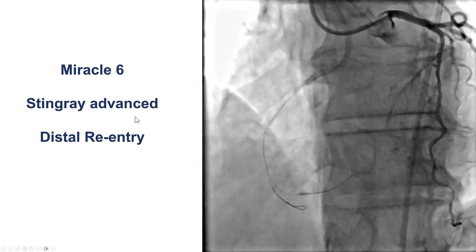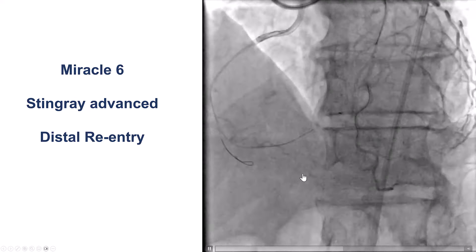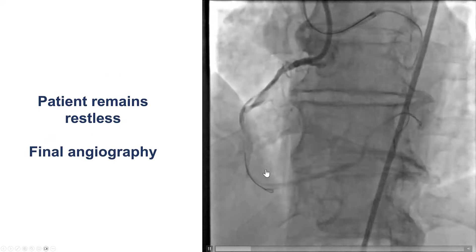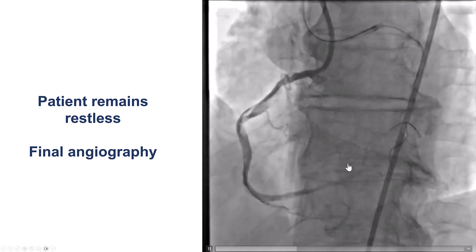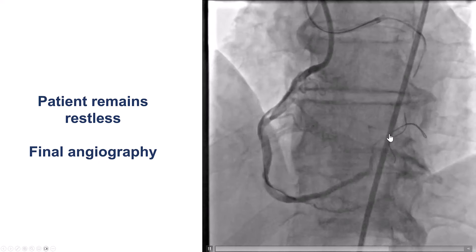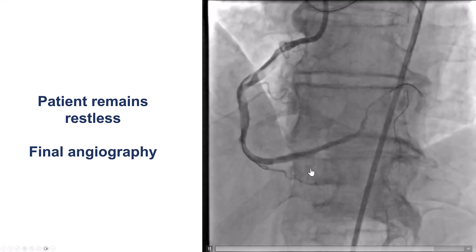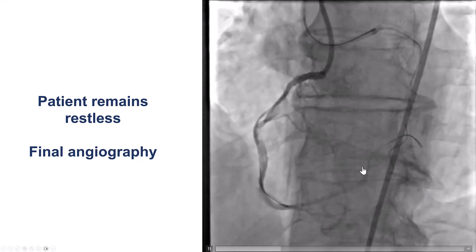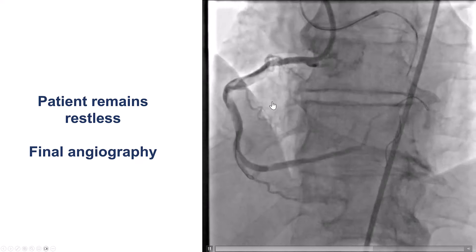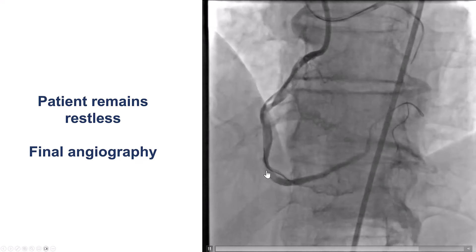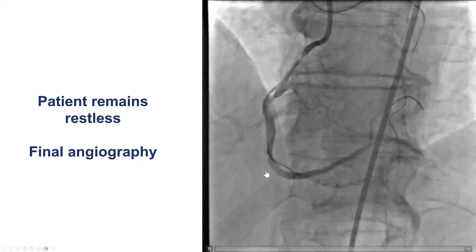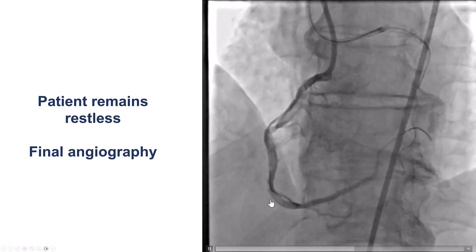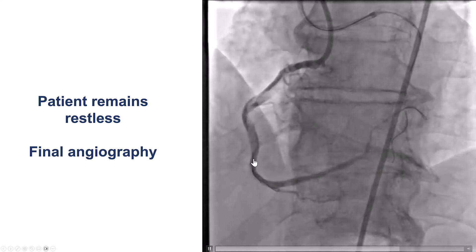We exchanged for a Miracle wire, used the stingray, and tried to do reentry again. We eventually did get access into the distal true lumen, but we had some dissection, poor outflow, and extensive dissection in the proximal and middle RCA. So we debated but decided in the end to stop.